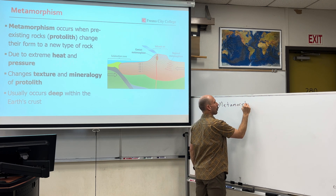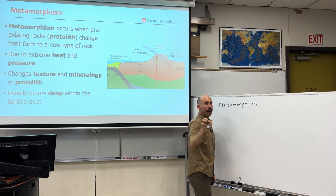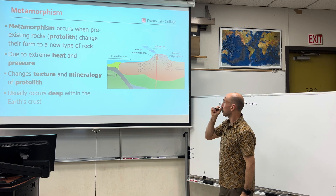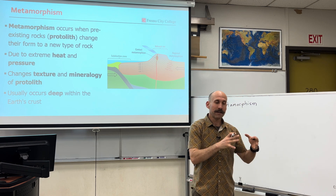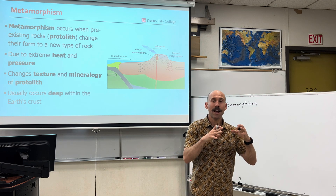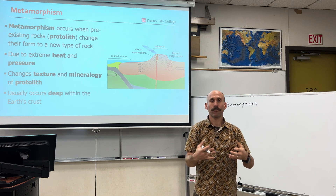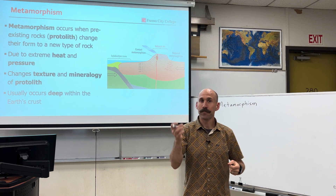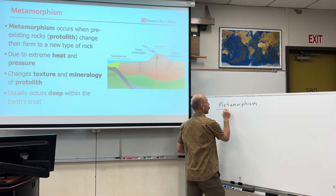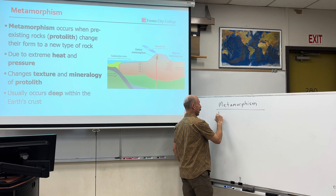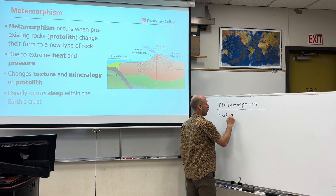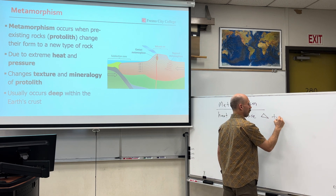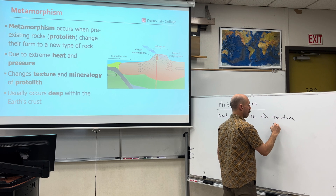If we zoom way out, there are three types of rocks: igneous, sedimentary, and metamorphic. Metamorphic rocks are rocks that were once a different type of rock — it could be any of the three — that have then undergone agents of metamorphism, specifically heat and pressure, to change their form. What changes is the texture and the mineralogy. So heat and pressure (delta) change texture and mineralogy.